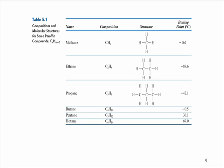The composition and molecular structure of some of these hydrocarbons are shown in table 5.1 in page 119 of your textbook, as you can see here. The table includes composition and structure and their boiling point.